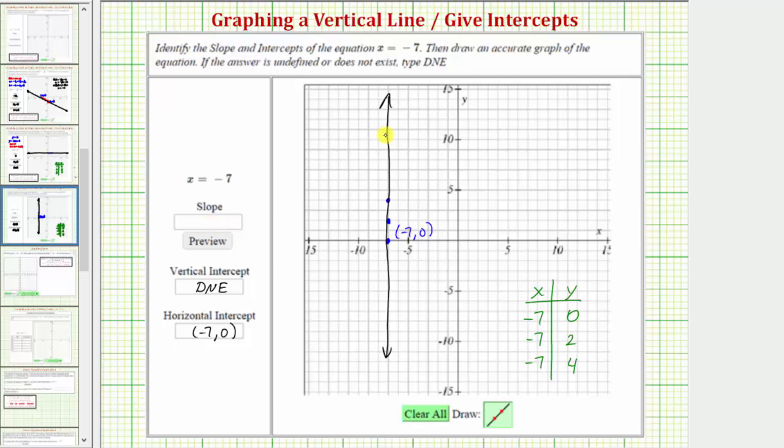If we recognize the slope of a vertical line is always undefined, again we enter DNE. If we don't recognize this, we can go ahead and use two points that we know are on the line and use the slope formula. So let's also show this.